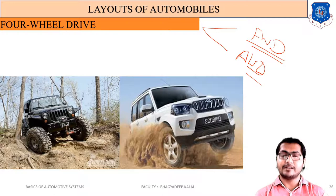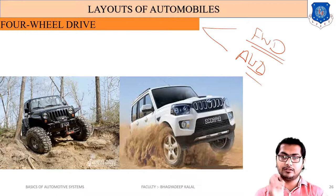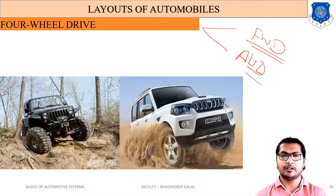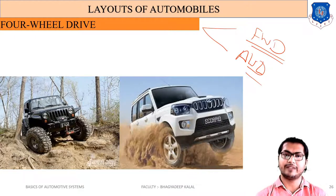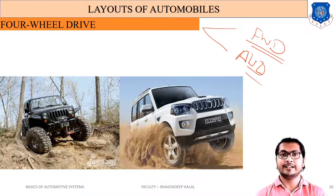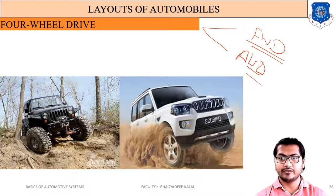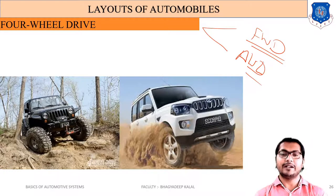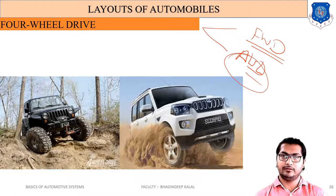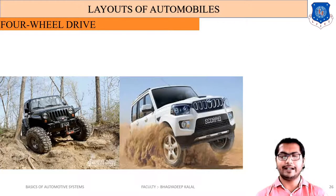In four-wheel drive with a transfer case, you can choose to transmit power to the rear wheels, front wheels, or all four wheels. In all-wheel drive, however, power is always transmitted completely to all wheels simultaneously — there is no choice to select rear or front only. That is the main difference between four-wheel drive and all-wheel drive.